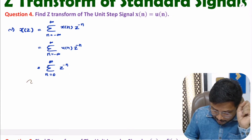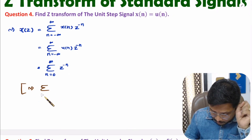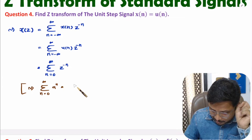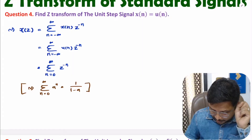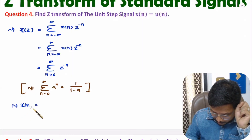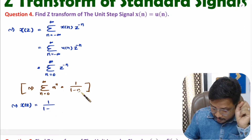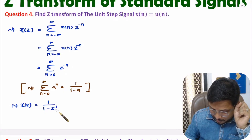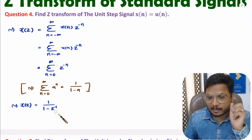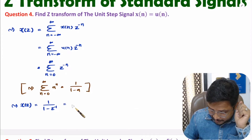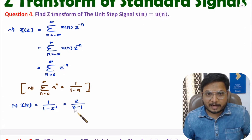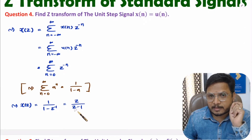One should know the basic calculation of algebraic summation. If you have summation where n is ranging from 0 to positive infinity of a to the power n, then that is 1 divided by 1 minus a. Using this, we can identify Z-transform X of Z. That will be 1 divided by 1 minus Z inverse, where Z inverse means 1 by Z. If you place 1 by Z here, then this will be Z divided by Z minus 1. So this is how we identify the Z-transform of the unit step signal.